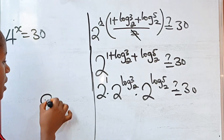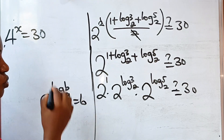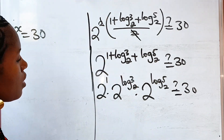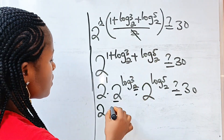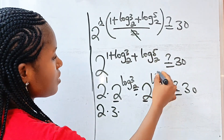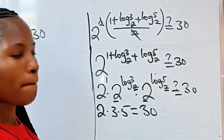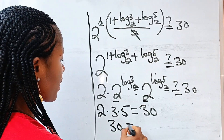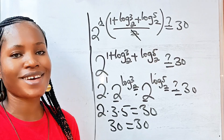Remember that a to the power of log base a of b is equal to b. So 2^(log₂3) equals 3 and 2^(log₂5) equals 5. That means we have 2 × 3 × 5. Two times 3 is 6, and 6 times 5 is 30. So 30 equals 30 — that proves the answer is correct!